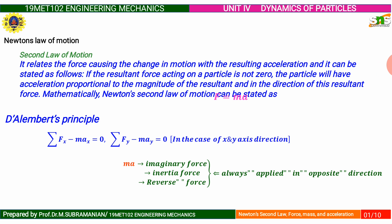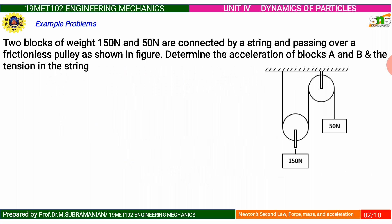Let A equal the acceleration of the 50 Newton block, and T be the tension in the string. Based on the motion analysis, the 150 Newton block is moving downward and the 50 Newton block is moving upward, as indicated in the figure. Consider the 50 Newton block moving upwards; the forces acting on the block along with the inertia force are shown in the figure.